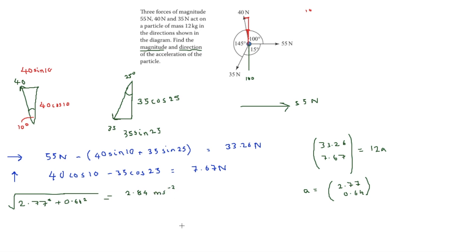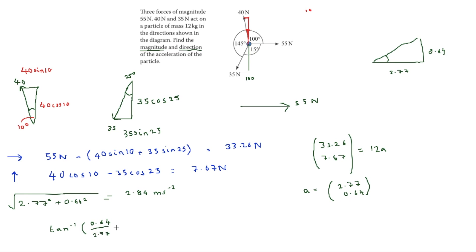The direction is found using inverse tan. We have 2.77 across and 0.64 up, so the angle is inverse tan of 0.64 over 2.77, which equals 13 degrees above the 55 newton force direction.